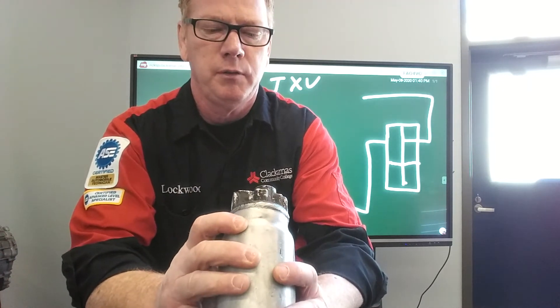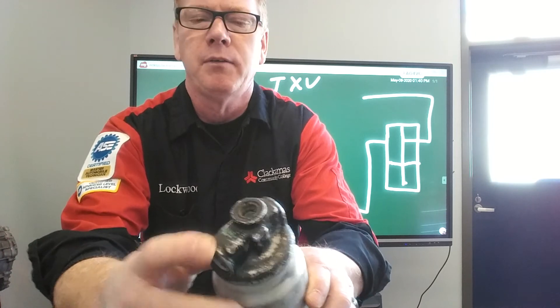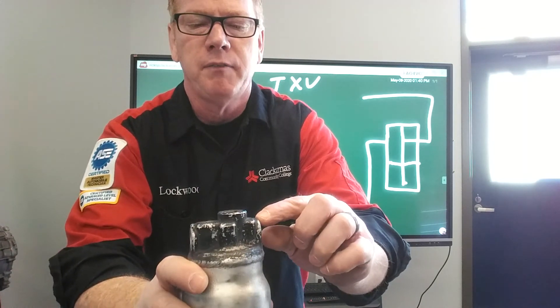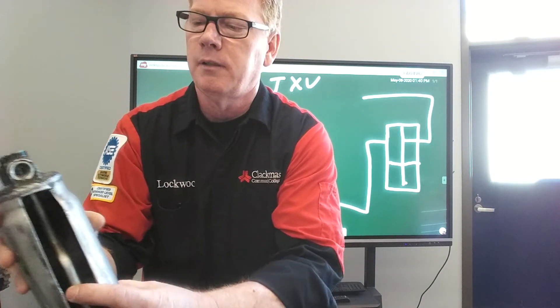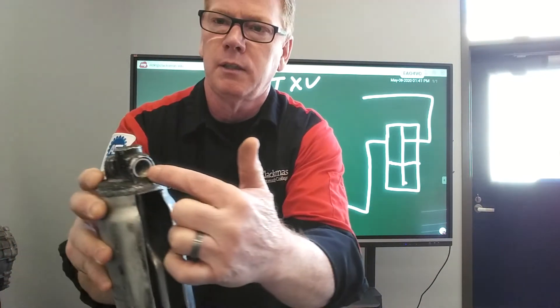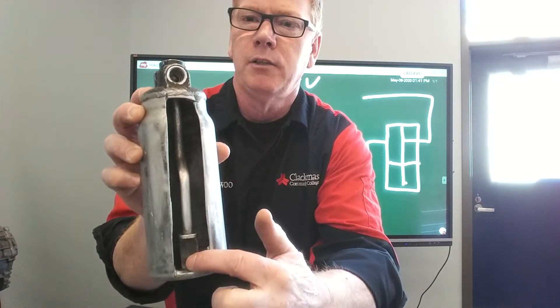This one's labeled condenser. You probably can't see that. And over here it says evaporator. So this is where it comes in. And as it leaves, that pipe actually runs all the way down to the bottom.